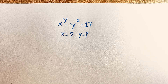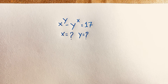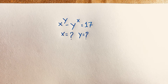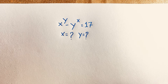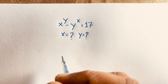Hello everyone. In this video, we are going to solve a nice math Olympiad question. This question is x to the power y minus y to the power x is equal to 17. We are to find out what is the value of x and y in this exponential equation. How do we solve this question?